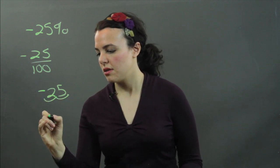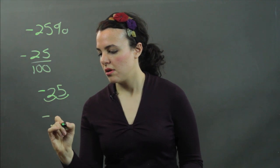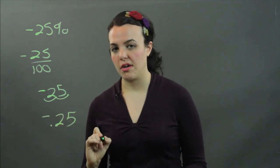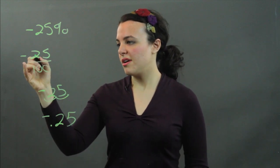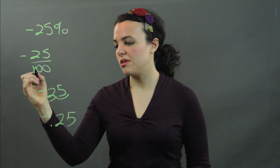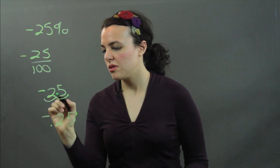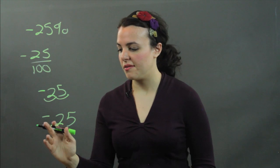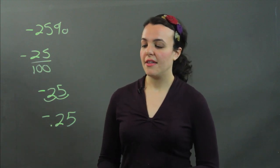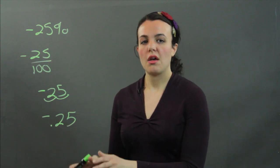You get negative .25, okay? So just again, negative 25 actually divided by 100 means you move the decimal over two places. So you get .25, negative .25. That is the decimal of your percent.